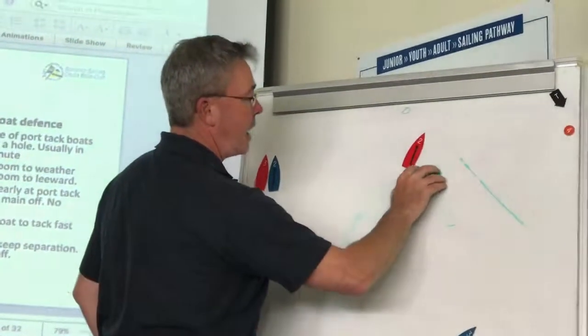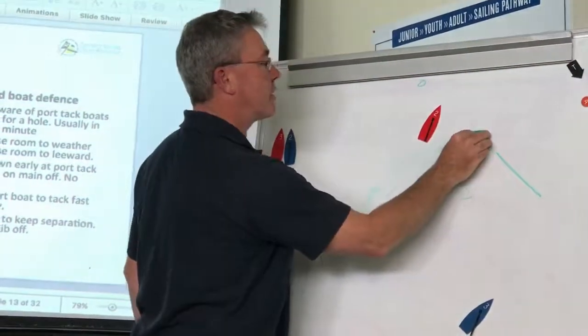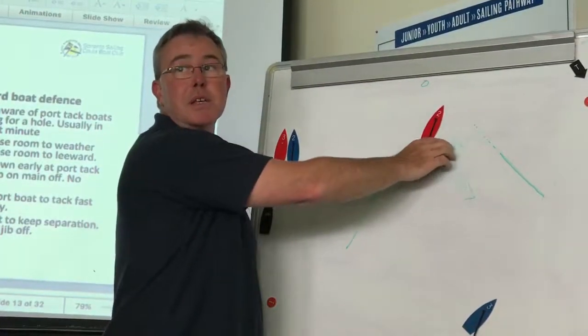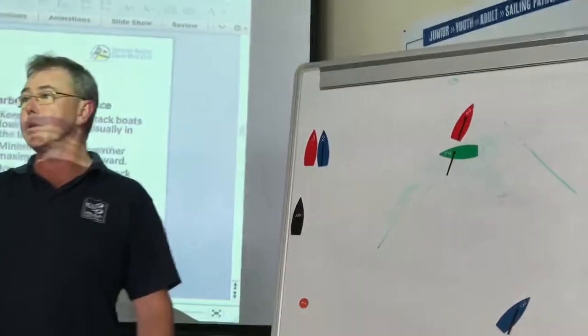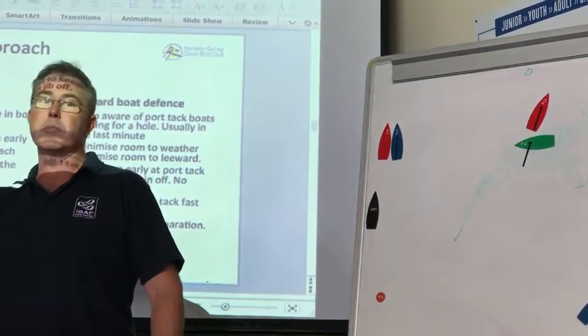And so the other thing, so what I do - and I have to be careful how I use the rules because it's seen that I've got an advantage - but I'll go protest, and could you just do a turn please? So protest, put the flag up, could you just do a turn please, and say it nicely.